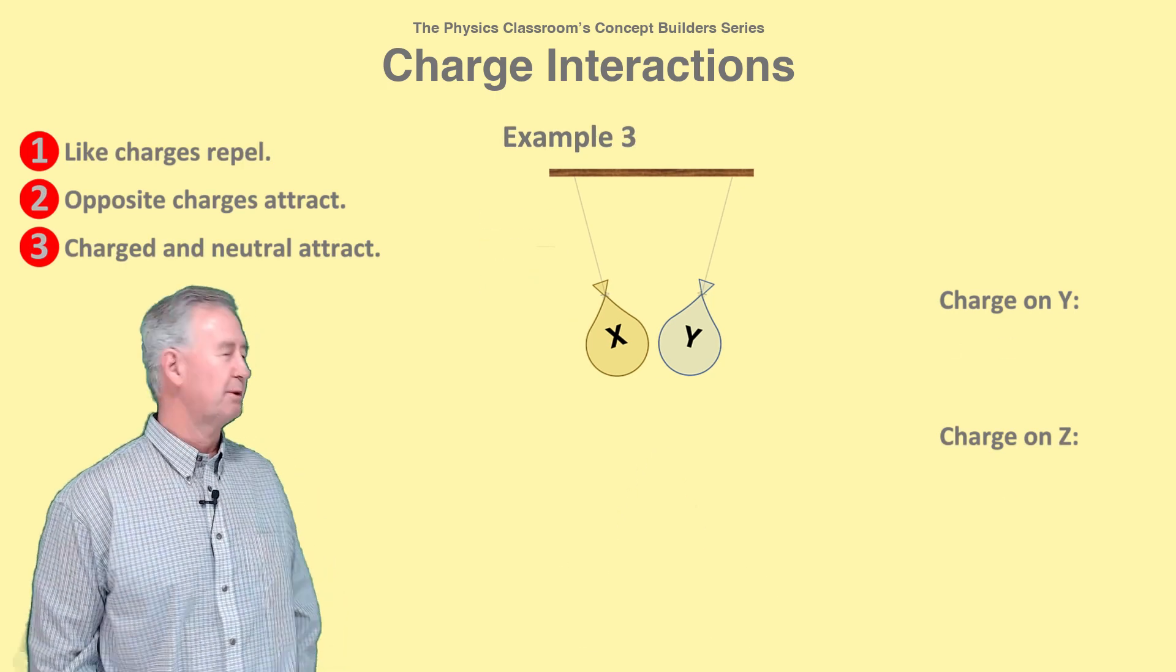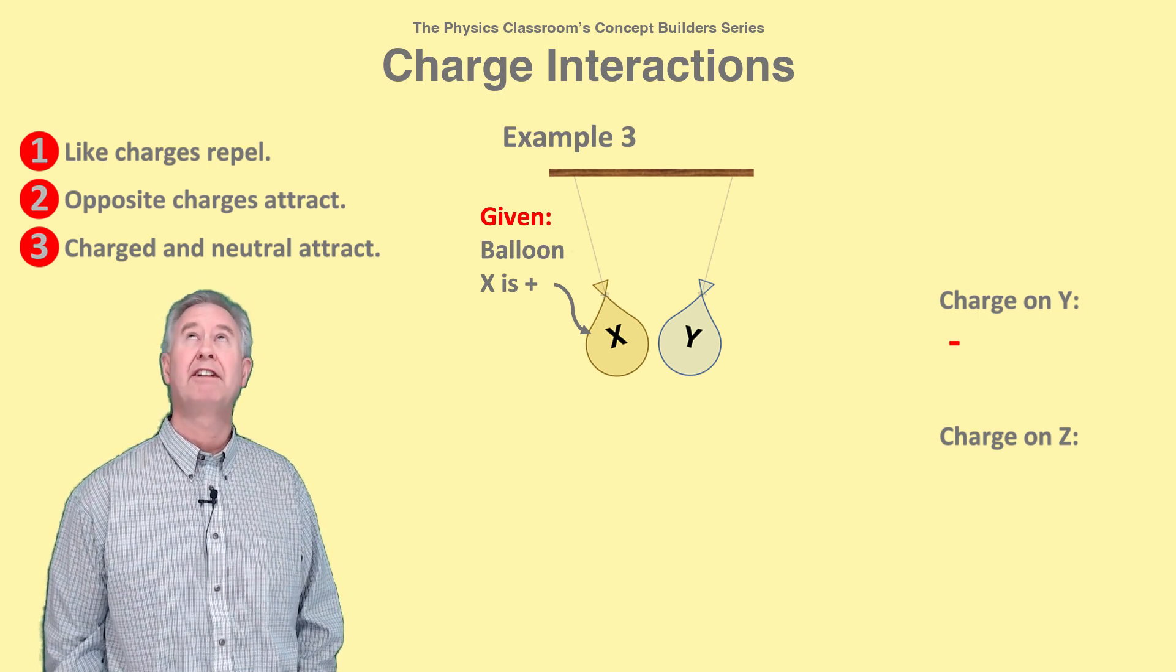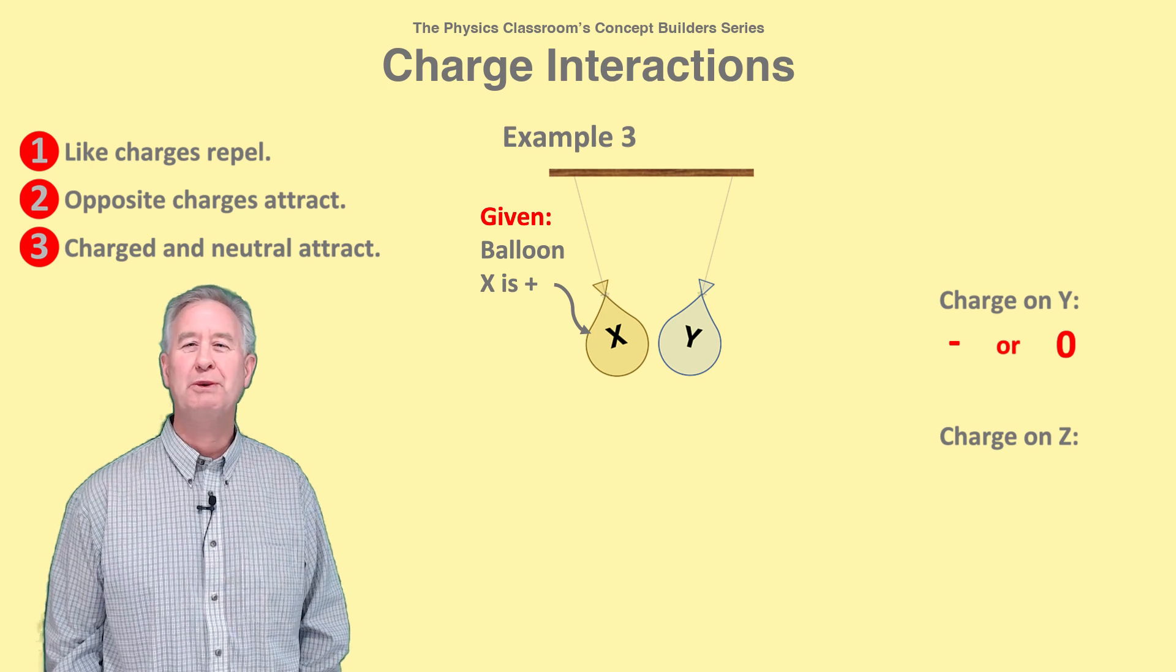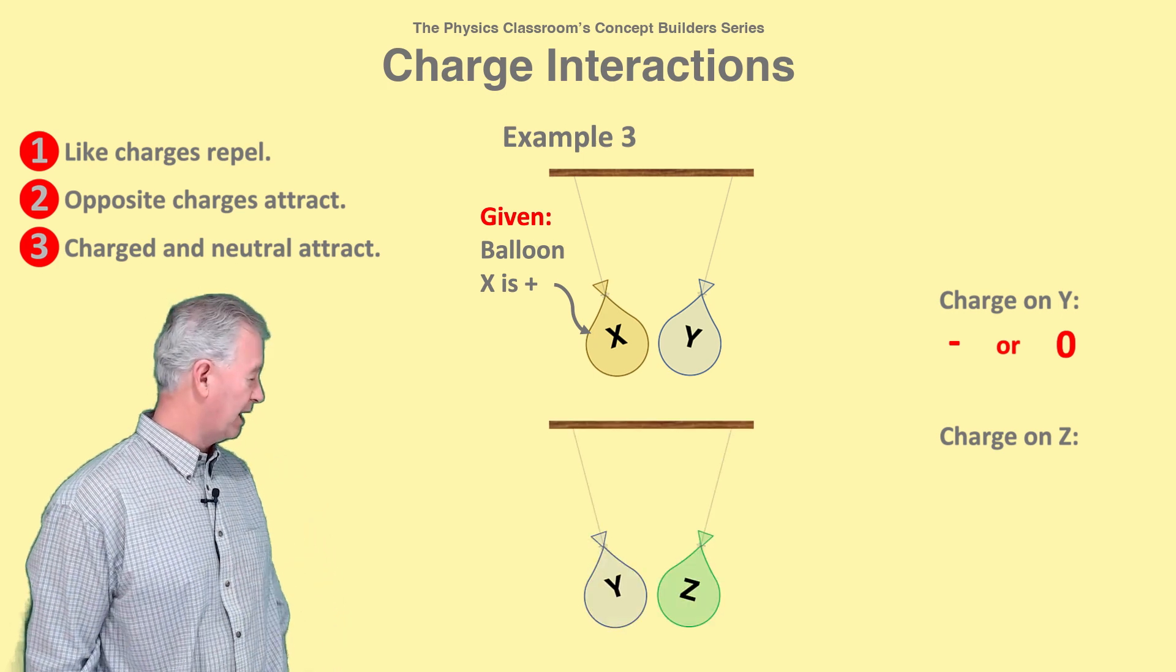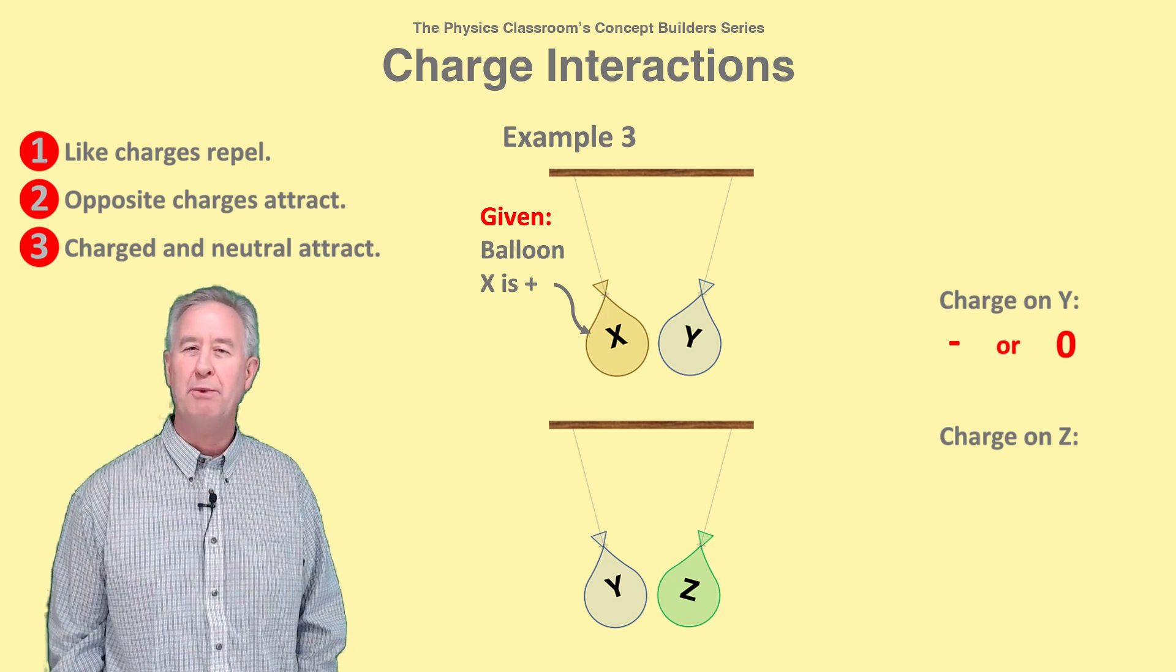In example three, X is positive and X and Y attract, so Y could be negative by rule two or neutral by rule three. Y and Z are observed to also attract, but we have limited knowledge about Y.